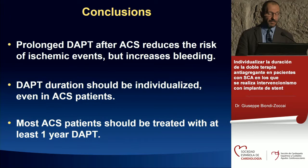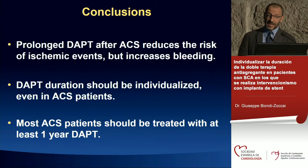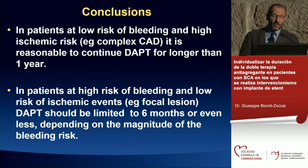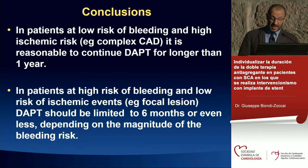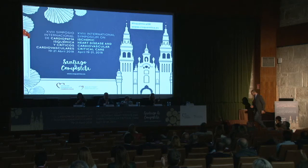To conclude: prolonged DAPT after ACS reduces the risk of ischemic events but also increases bleeding risk. DAPT duration is best individualized for each patient. Even ACS patients should be judged individually; however, most ACS patients should be treated with at least one year of DAPT. In patients at low bleeding and high ischemic risk — such as complex CAD — it's reasonable to continue DAPT beyond one year. In patients at high bleeding and low ischemic risk treated with a new-generation drug-eluting stent, DAPT should be limited to six months or less.